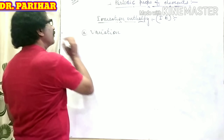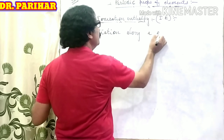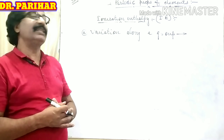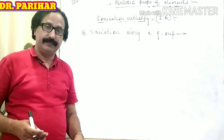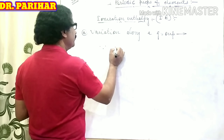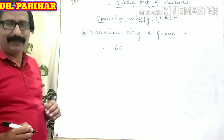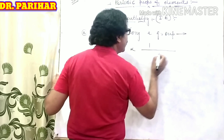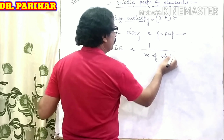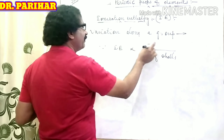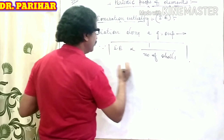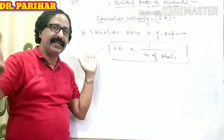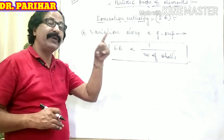Variation along a group: what will happen to the value of ionization enthalpy of different elements when moving down the group? Ionization enthalpy is inversely proportional to the number of shells. As the number of shells increases, ionization enthalpy decreases.